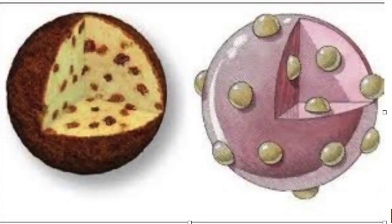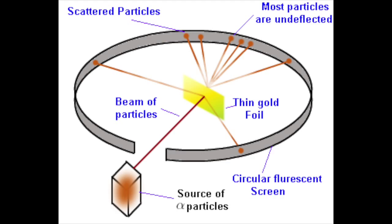Flash forward to 1911. Ernest Rutherford proved J.J. Thomson wrong — ironic, since he had been J.J.'s student. Ernest Rutherford and two others, Ernest Marsden and Hans Geiger, conducted an experiment firing alpha particles at solid substances such as gold foil. He found that some rays passed through without any change in direction, others deflected at different angles, and some ricocheted right back. He concluded that the atom consisted of a small, dense, positively charged nucleus at the center, with negatively charged electrons surrounding it.